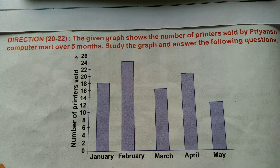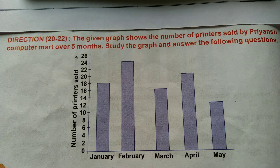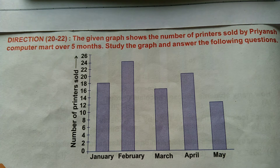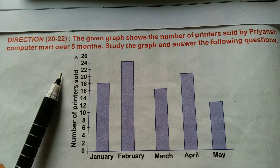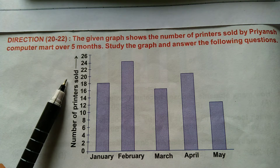Direction is given for question number 20 to 22. The given graph shows the number of printers sold by Priyan's computer mart over 5 months. Study the graph and answer the following questions. This is a bar graph. The horizontal line shows months and the vertical line shows number of printers sold.